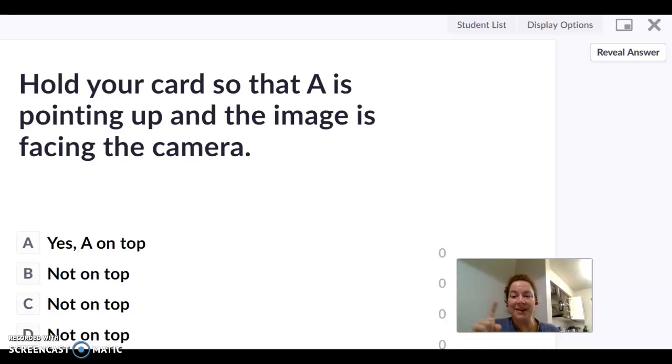When you see on the screen the following screen that asks you to hold your card so that A is pointing up and the image is facing the camera, you are going to get your Plicker card and it should look something like this.